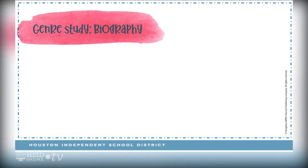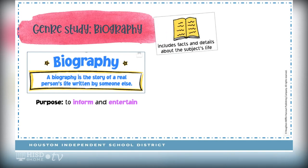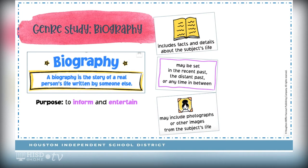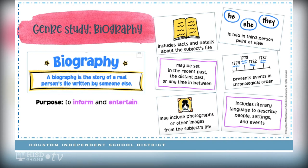It's time for a genre study on biography. Biography is the story of a real person's life written by someone other than that person. Authors of biographies present events and details about a person in ways that help readers better understand him or her. The purpose of biographies is to inform and entertain. Biographies include facts and details about the subject's life, may be set in the recent or distant past, may include photographs, are told in third-person point of view, present events in chronological order, and include literary language to describe people, settings, and events.